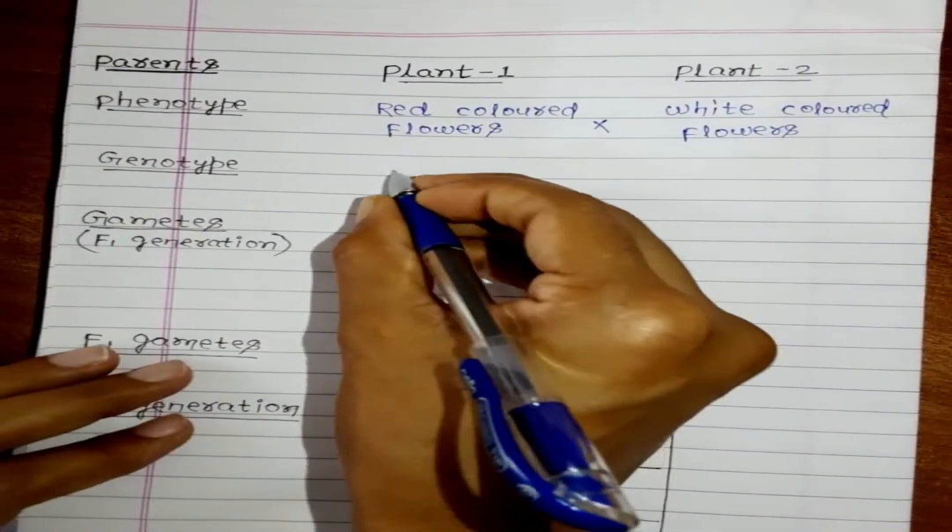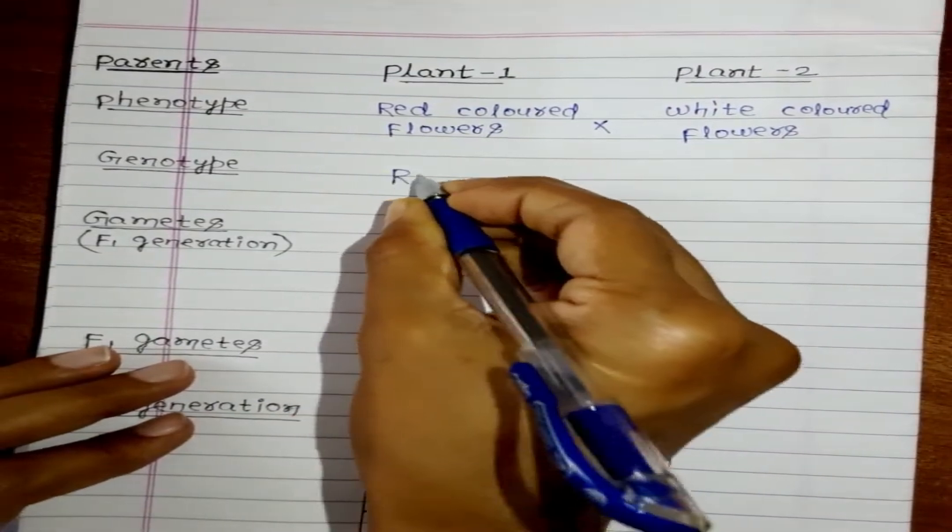Then we will write the genotype. This is the genotype, the representation of this. So that is capital R, capital R. For white flower it is given small r, small r.